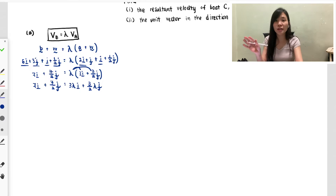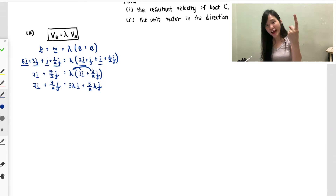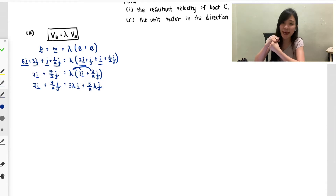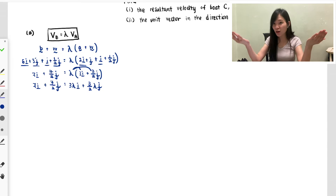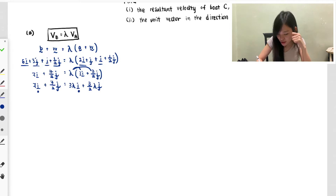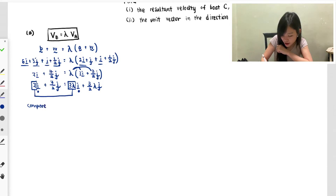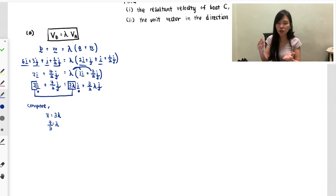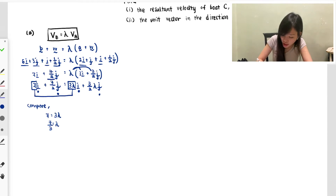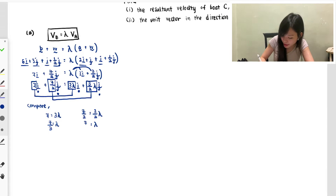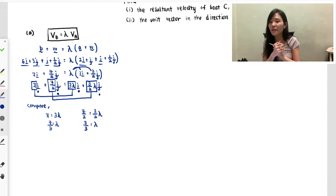Now use the compare method to get rid of i and j, because we have three unknowns but only want lambda. Looking at the i coefficients: left side has 7, right side has 3λ — so 7 = 3λ, giving lambda = 7/3. To verify, compare the j coefficients: left side is 7/2, right side is 3/2 × lambda. Solving: 7/2 ÷ (3/2) = 7/3. We get the same lambda, so it's correct.